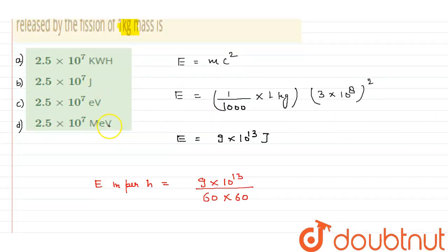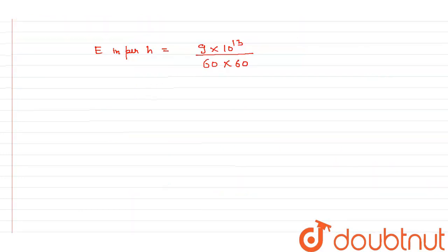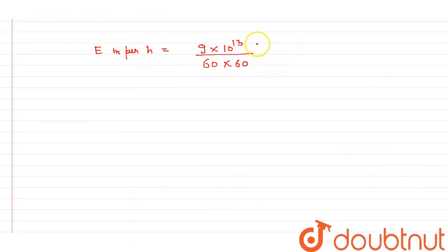Or, as per the options, joule, electron volt, mega electron volt, and kilowatt hour. So if I want to calculate in kilowatt per hour, my answer, if you calculate it, you will get 0.25 into 10 to the power 11.